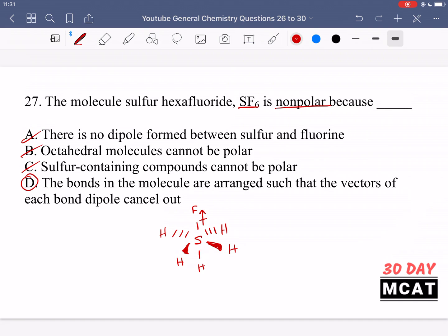The bonds in the molecule are arranged such that the vectors of each bond dipole cancel out. Once again, no net dipole. Therefore the overall molecule, even though it has dipole bonds, does not have a net dipole moment. Therefore it's not an overall polar molecule and it's going to be nonpolar.